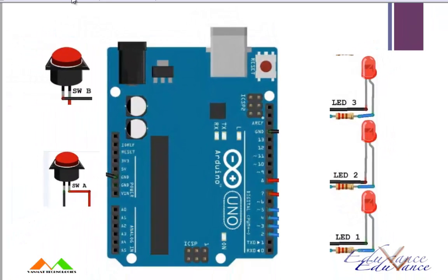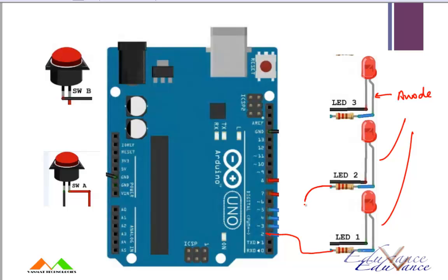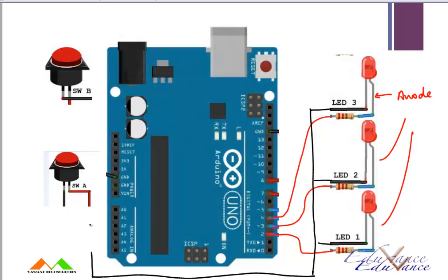Let us look at how we are going to connect this. You take the anode of all the three LEDs. The anode of LED number one you connect to pin number two, the anode of LED number two you connect to pin number three, the anode of LED three you connect to pin number four. Then you take the cathodes, short them, and connect to ground.